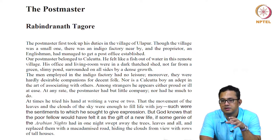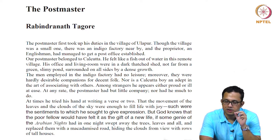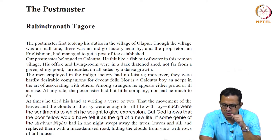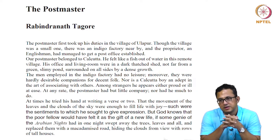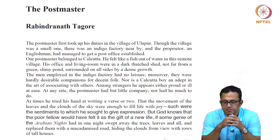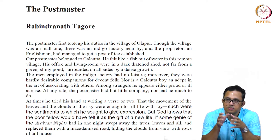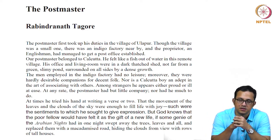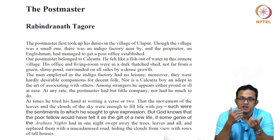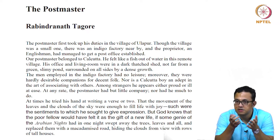Some very symbolic things about the story — the sites are very important. The post office itself is a colonial signpost, and we have the indigo plantation, which is also a colonial site. We have these colonial spaces alongside which the postmaster is situated, and we have the human subject negotiating with those colonial spaces. The entire story is a very human story about the alienation of a city person in a rural setting and the very empathetic bond he establishes with a little girl called Ratan.